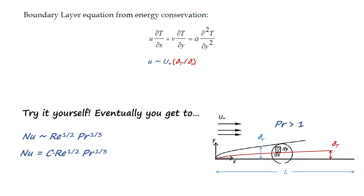What about turbulent flow? The boundary layer equations for turbulent flow look different because of all the swirling, mixing things going on — you get things called turbulent shear stress and other complications. You can actually do scale analysis for that, but it becomes a lot more complicated and you need a bit of turbulence theory to get there.